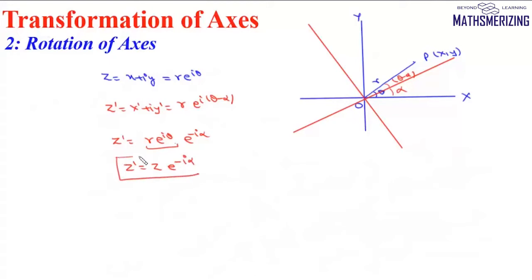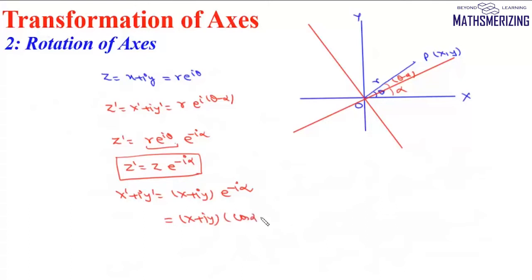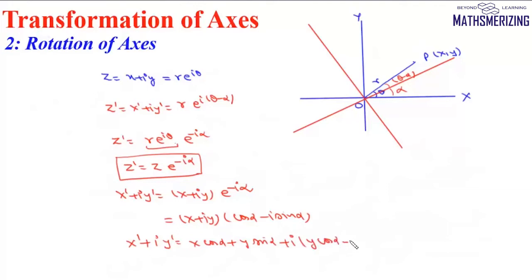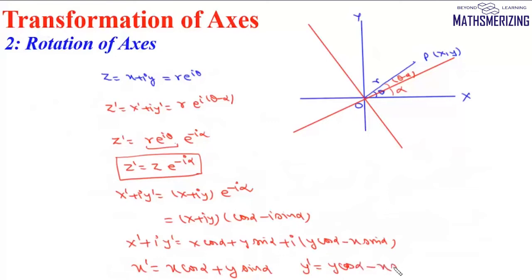So the relationship is: X dash plus iota Y dash equals (X plus iota Y) times e to the power minus iota alpha. Expanding, this is (X plus iota Y)(cos alpha minus iota sin alpha). So X dash plus iota Y dash equals X cos alpha plus Y sin alpha plus iota(Y cos alpha minus X sin alpha). Comparing real and imaginary parts: X dash equals X cos alpha plus Y sin alpha, and Y dash equals Y cos alpha minus X sin alpha.